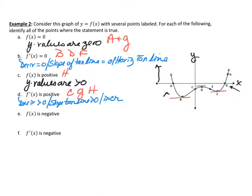Next: f(x) is negative means the y-values are less than zero — below the x-axis. All the points with y-values less than zero are b, c, d, e, and f.